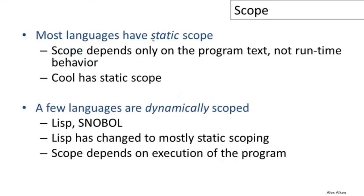Most programming languages today have what is called static scope, and Cool is an example of a statically scoped language. The characteristic of static scoping is that the scope of a variable depends only on the program text, not on any runtime behavior. The scope is defined purely syntactically. There are also dynamically scoped languages, and for a long time there was debate about whether static scoping was better — today the static scoping camp has clearly won.